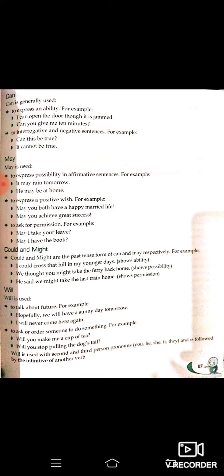'May' is used to ask for permission — for example: 'May I go?' — kya main ja sakta hoon? 'Could' and 'might' are the past tense forms of 'can' and 'may.' For example: 'I could cross that hill in my younger days' — main apne younger days mein us pahad ko cross kar leta tha — expressing ability in the past.